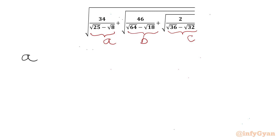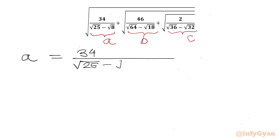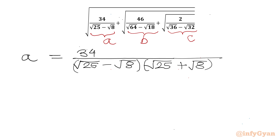So let me write A equal to 34 over √25 minus √8. Let us rationalize our denominator, so we multiply by √25 plus √8.